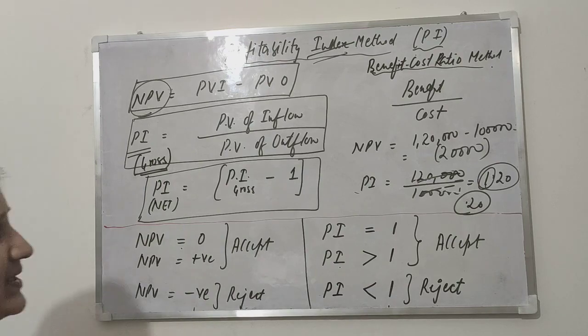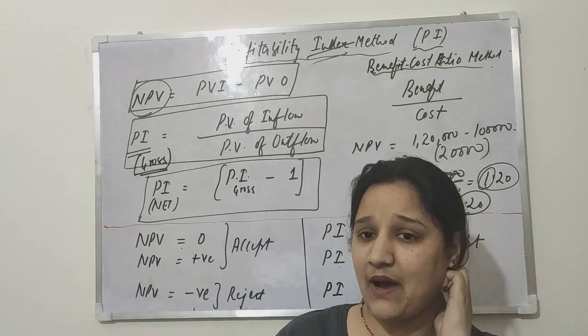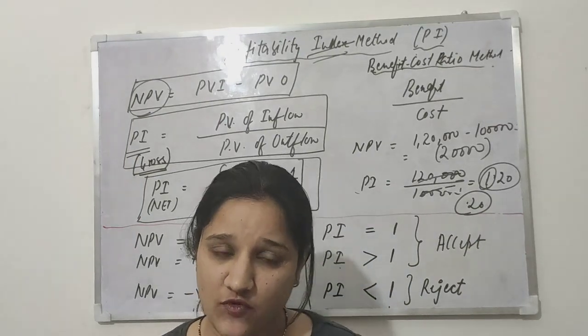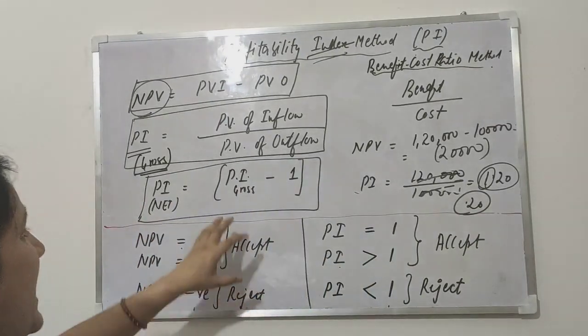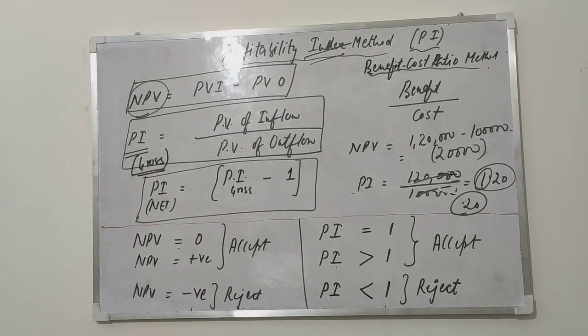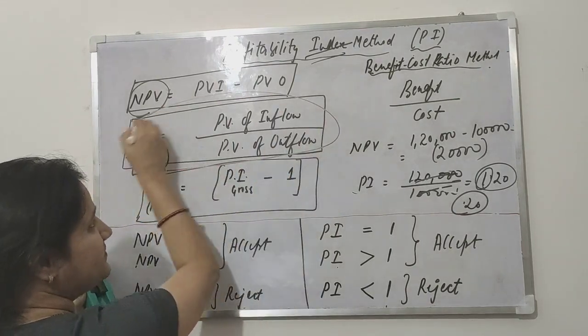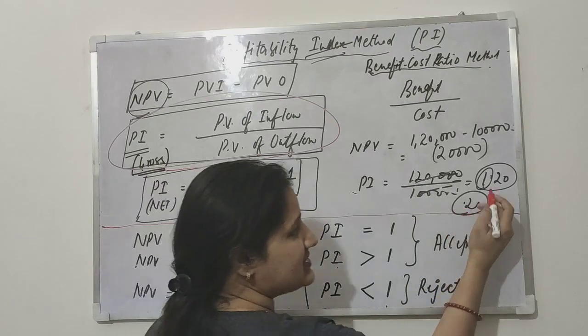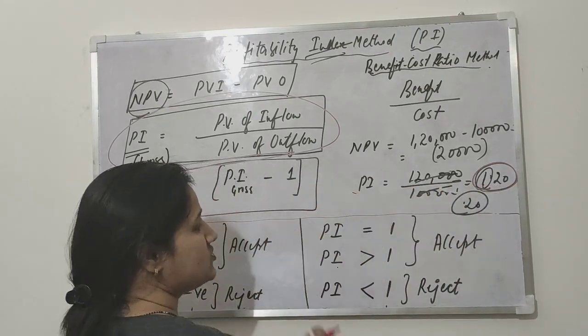Profitability index - simple, you just have to calculate present value of inflow and present value of outflow, and then the values you have to divide with each other. Present value of inflow divided by outflow. According to this formula, this is the answer.